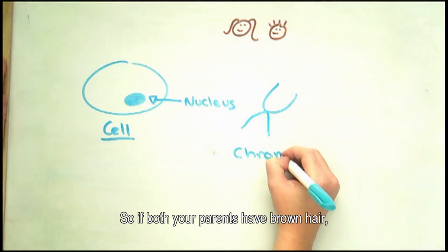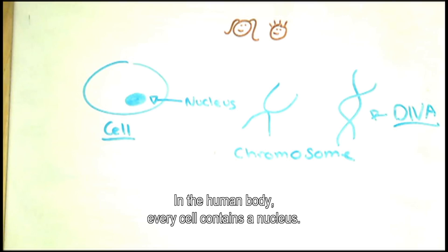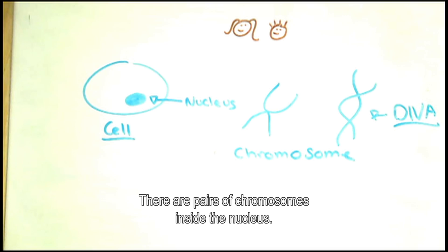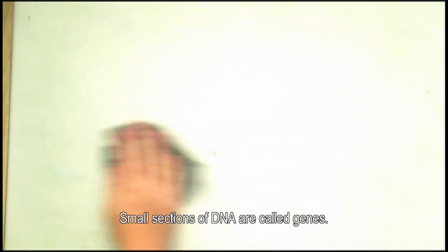So if both the parents have brown hair, then in most cases you'll have brown hair too. In the human body, every cell contains a nucleus. There are pairs of chromosomes inside the nucleus. One chromosome of each parent makes up each pair. Chromosomes are made of DNA. Small sections of DNA are called genes.